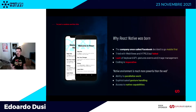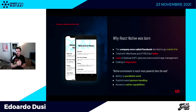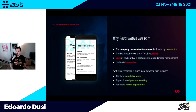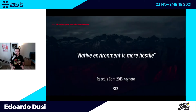Vengono fuori un sacco di potenzialità del mondo mobile che da web non ci sono: la possibilità di parallelizzare il lavoro usando i thread, una sofisticata gestione delle gesture, e l'accesso alle capability native del device — il GPS, la webcam, eccetera. React Native traduce in template con elementi specifici di React Native cose che erano invece markup HTML, ma si scrive sempre con markup e JavaScript.